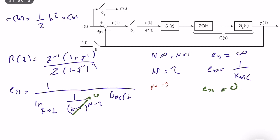To improve steady-state performance, based on your type of input, you should increase the type of the system — which means adding a pole at z = 1, equivalent to adding accumulators, analogous to integrators in continuous time. We already know that s = 0 maps to z = 1, so we are doing exactly the same thing in the digital domain.